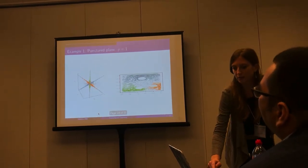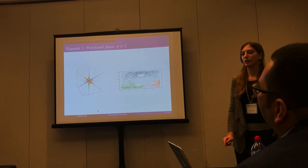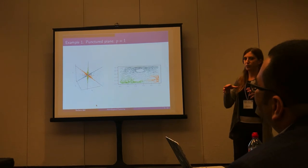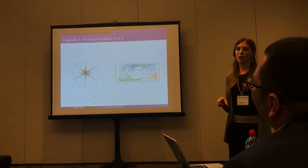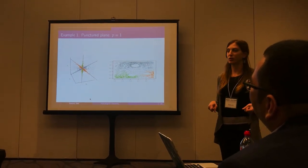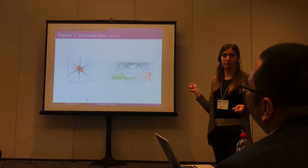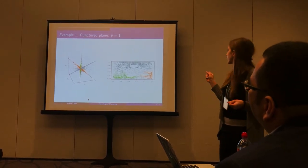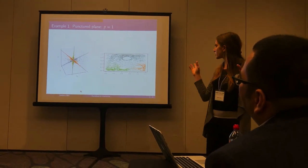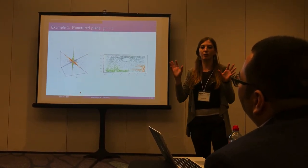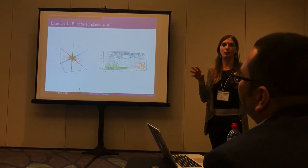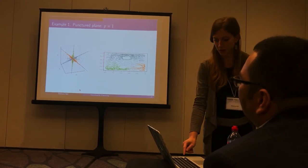A perhaps more illustrative example is the punctured plane: a simplicial complex given by a triangulation of a plane from which three one-cavities have been removed. Applying the harmonic clustering algorithm to cluster the edges, we obtain three clusters given by edges in blue, orange, and green, which correspond to loops around the three one-cavities present in the simplicial complex. We are thus able to detect the one-cavities in the original simplicial complex.